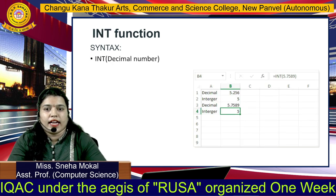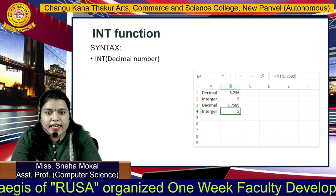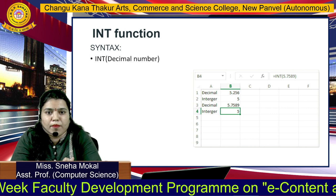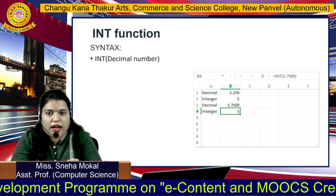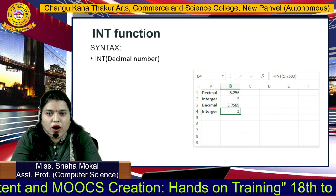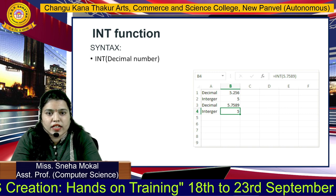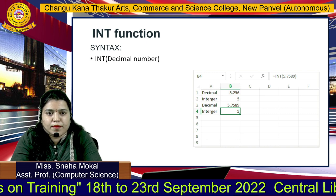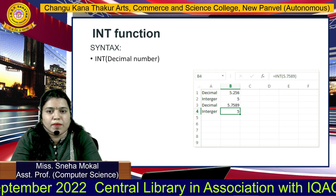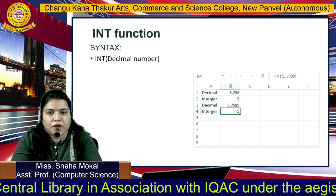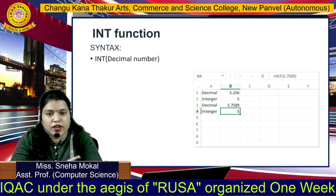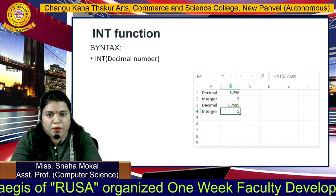Next है INT function. INT मतलब integer function है. Integer मतलब जो भी आपकी values रहेंगी वो whole numbers होती हैं, और जो आपके decimal number रहते हैं जैसे 5.25 — उन्हें INT function की मदद से integer में convert करना है. Suppose आपने INT में parameter pass किया 5.25, तो उसका output क्या आएगा? 5 आएगा, क्योंकि वो integer value ही देता है — decimal के बाद जो भी values आएंगी वो output में नहीं दिखाई देंगी.